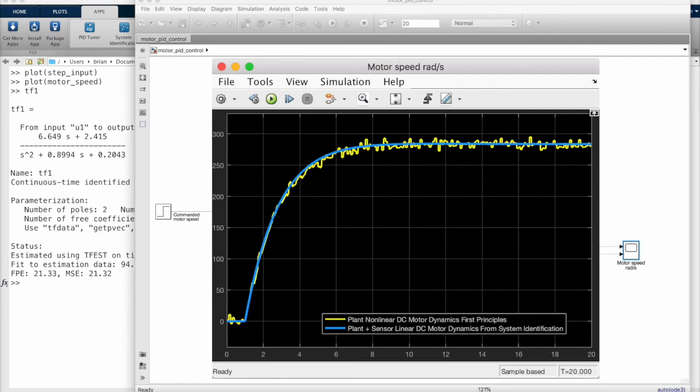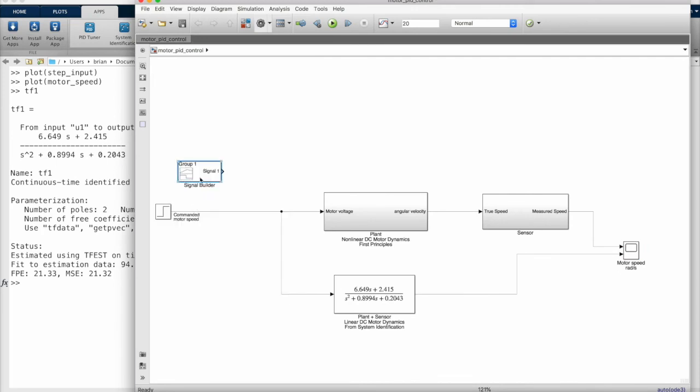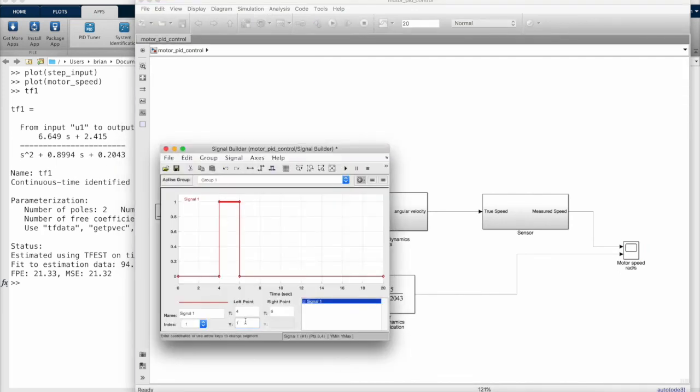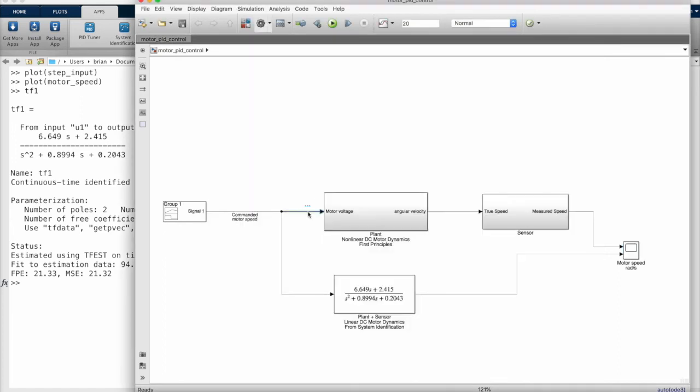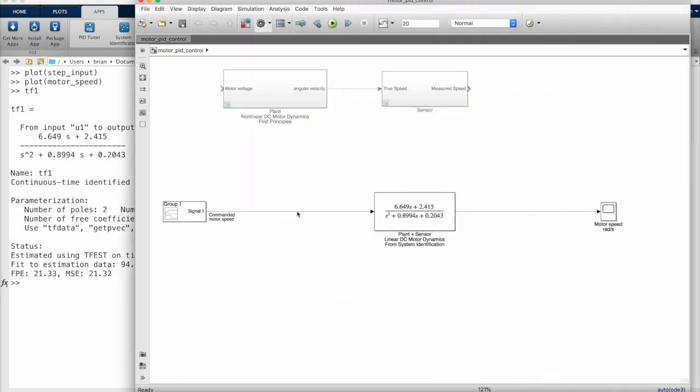But of course this looks good. This is the data we use to fit the model. The real test is to see how our linear model compares against a wide range of arbitrary inputs. And again, it worked pretty well. So you can see how simple it can be to create a model using system identification rather than slugging through a model with first principles. And now that we have this model, we could wrap a PID controller around it and use the linear model to tune the gains.